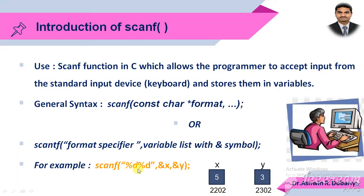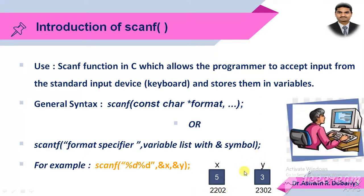In the scanf function, in double quotation marks we first specify the format specifier according to the list of variables. If we want to take input of two integer variables x and y, we mention two %d — one for x and another for y. The ampersand before a variable gives its address. Whenever a user inputs a value from the keyboard, that value is stored at the address of that variable. Every variable has three things: variable name, variable value, and variable address.